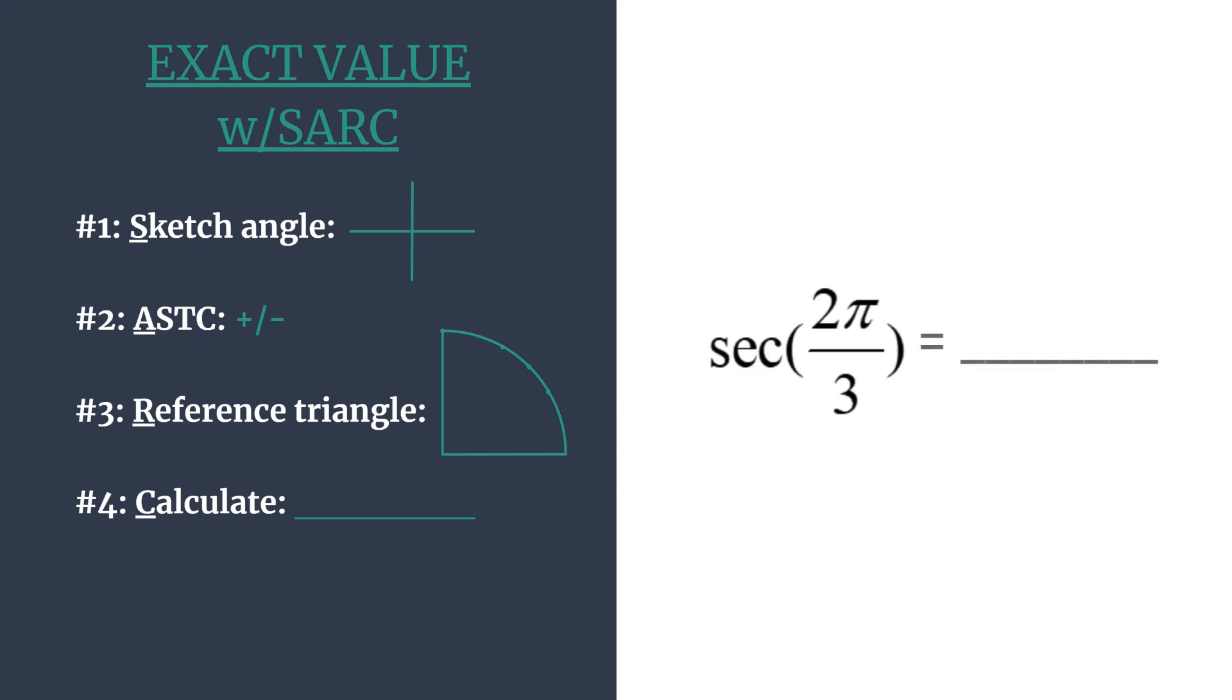And we're doing that again for secant of 2 pi over 3. So we start first by sketching the angle. So 2 pi over 3 is in the second quadrant approximately here. And we know this because we start on the positive part of the x-axis at 0 and if we rotated a half rotation around a semicircle, we'd be at pi.